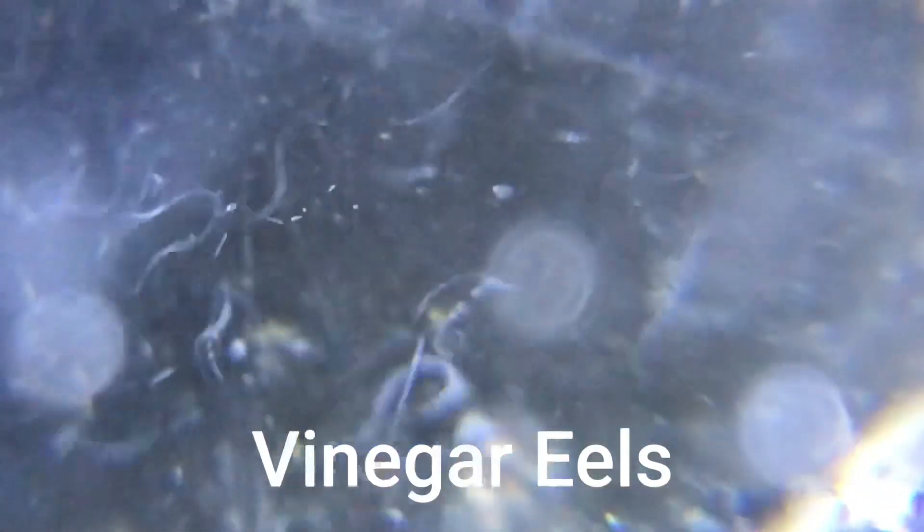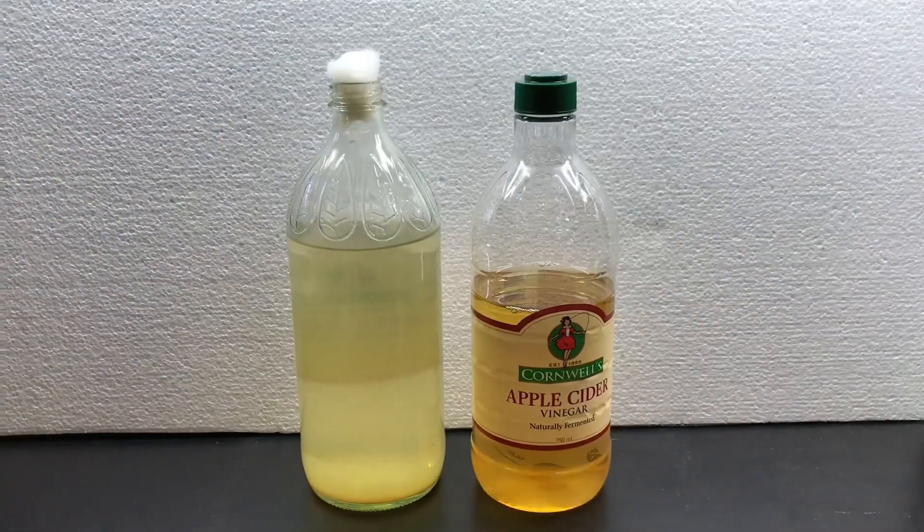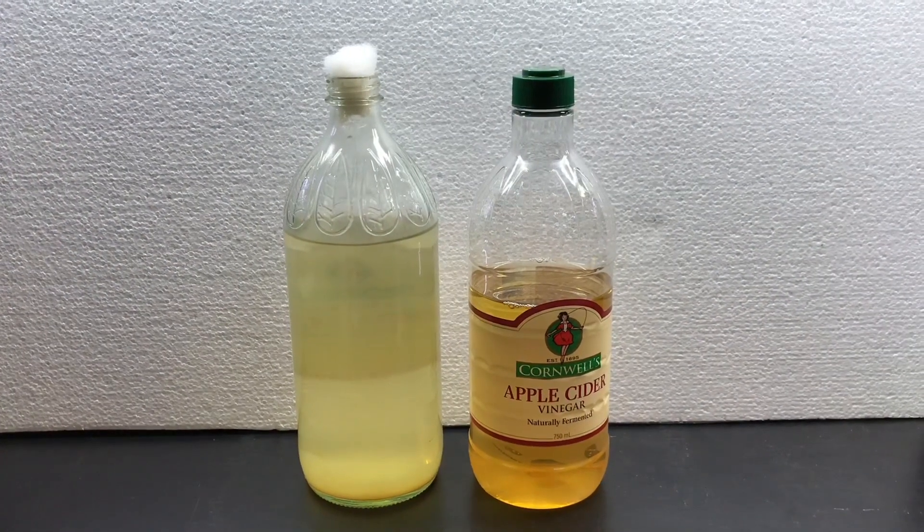They also swim in the water column and on the water surface, so they are beneficial food for fry that like to hang around close to the surface and in the water column.